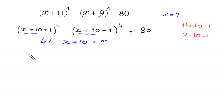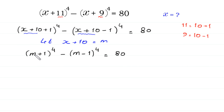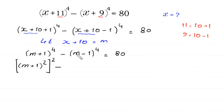After substitution, the equation becomes m plus 1, whole to the power 4, minus m minus 1, whole to the power 4, is equal to 80. We can write m plus 1 to the power 4 as m plus 1 whole square, whole to the power 2, and similarly m minus 1 to the power 4 as m minus 1 whole square, whole to the power 2, equal to 80.